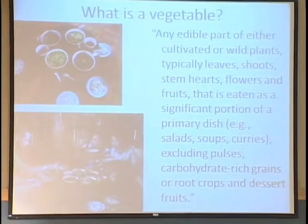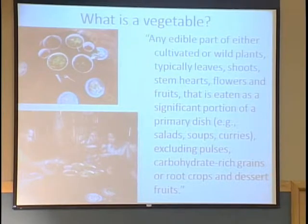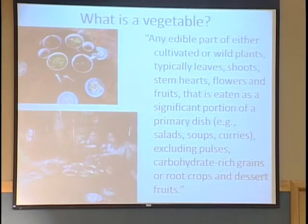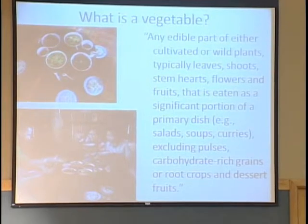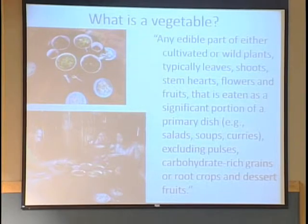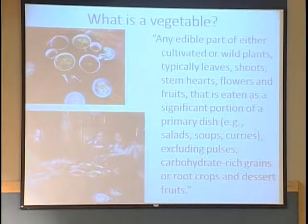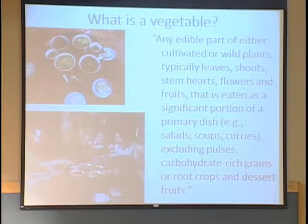One of the things we had to figure out was actually: what is a vegetable? This is socially and culturally defined. We invented our own definition for the ECHO handbook: any edible part of wild or cultivated plants — leaves, shoots, stem hearts, flowers, and fruits — that is eaten as a significant portion of a primary dish, not including pulses or beans, not including carbohydrate-rich grains like rice, corn, sorghum, or root crops, and not including dessert fruits. But the real definition was whatever fits on the low table — a knee-height table in the middle of a kitchen where curried dishes would be placed. So our practical definition for a vegetable was any main ingredient in a dish that goes on the low table.